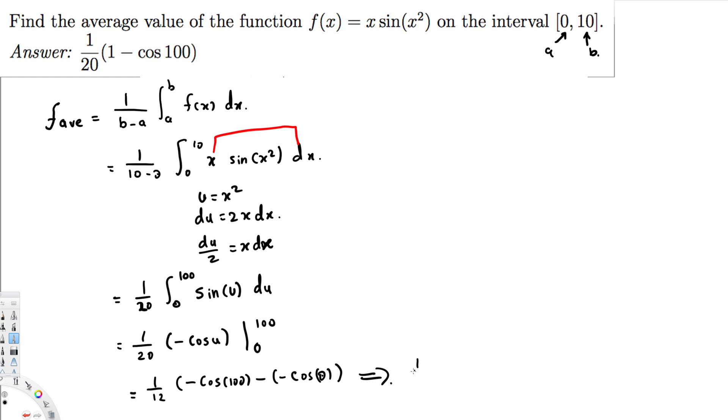Let's continue with this one. We are going to have 1 over 12, minus cos(100). And we know that cos(0) is 1, so this is going to be minus 1 right here. Let's simplify this one. So we are going to have 1 over 12, minus cos(100) plus 1. Now we can rearrange this one and write 1 over 12, 1 minus cos(100).